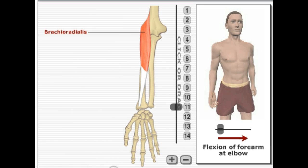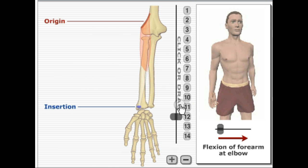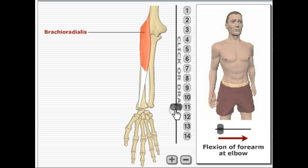Here we have brachioradialis. It's going to originate on the lateral supracondylar ridge of the humerus, proximal to the capitulum of the humerus, and it's going to insert proximal to the styloid process of the radius. It performs the action of flexing a semi-pronated forearm.